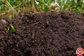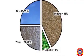The soil which is suitable for agriculture contains 45% minerals, 25% water, 25% air, and 5% organic matter.